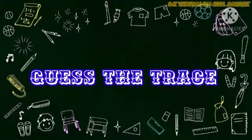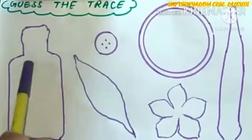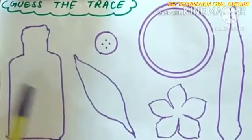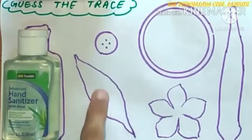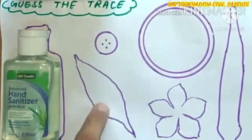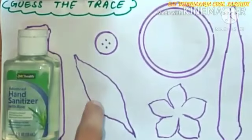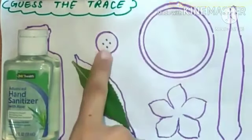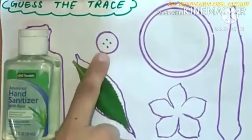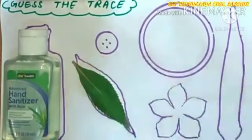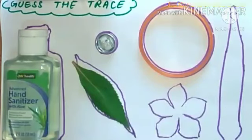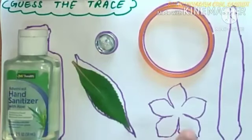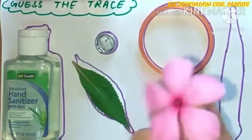Next topic is Guess the Trace. Can you guess what is this? This is the trace of a bottle. Next, what is this? This is the trace of a leaf. Next, this is the trace of a button. This is the trace of a bangle. And this is the trace of a flower.